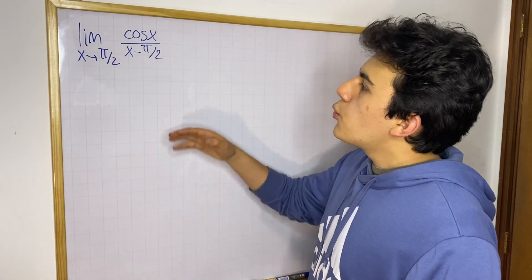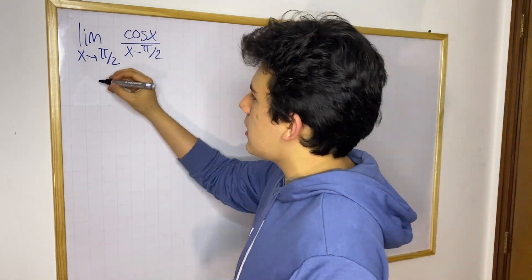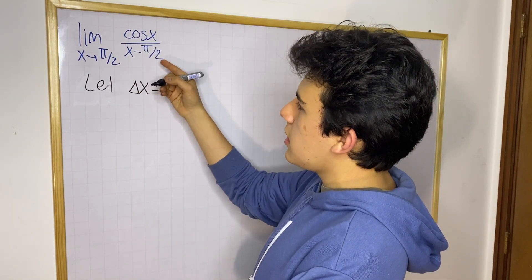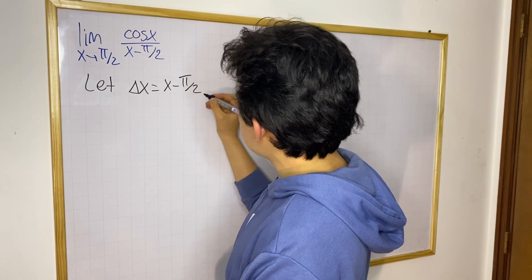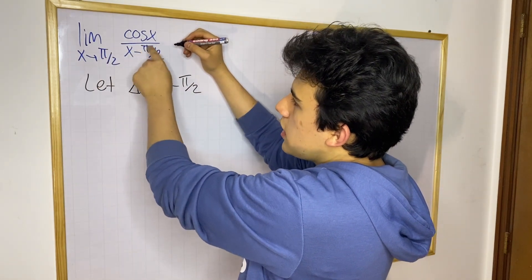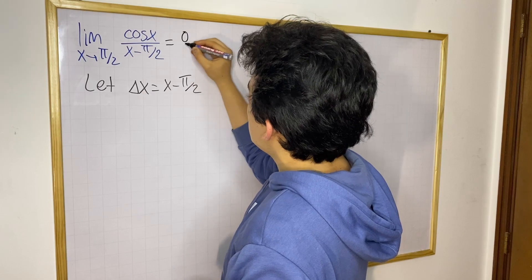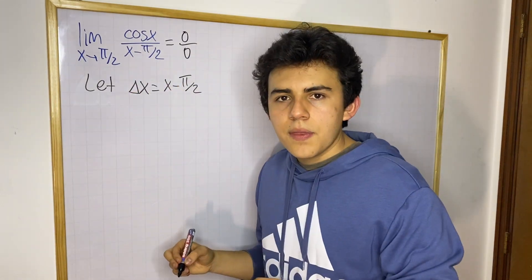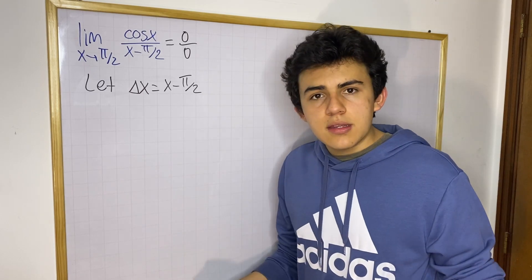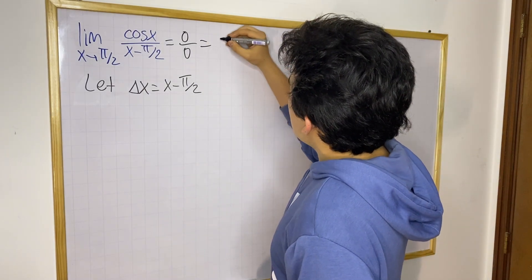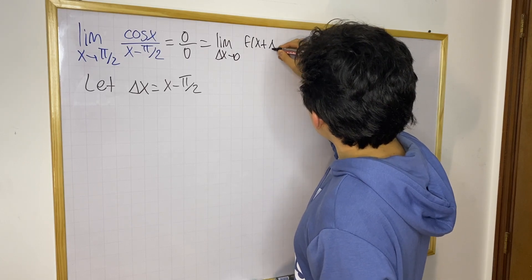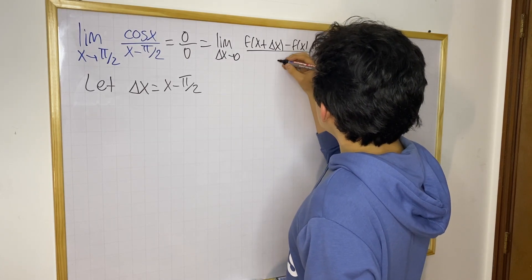The first thing we want to do is define a new variable, delta x. Let delta x be equal to x minus pi over 2. Now remember, when we evaluate cosine at pi over 2, we get 0 in the numerator, so we have 0 over 0. There is another limit in calculus that also goes to 0 over 0: the limit as delta x approaches 0 of f(x + delta x) minus f(x), all over delta x.